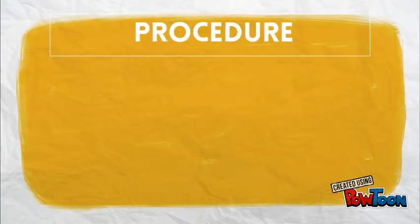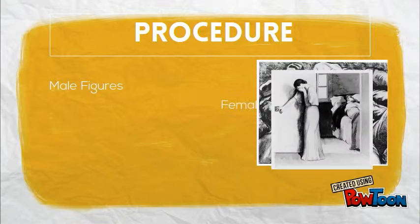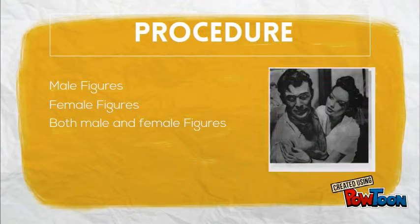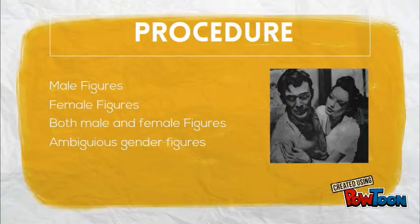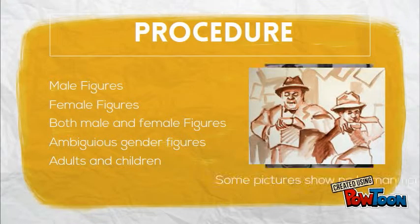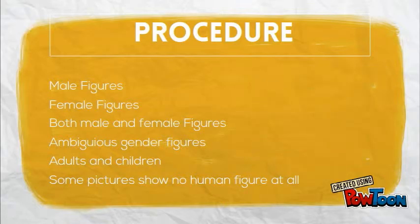The complete version consists of 32 picture cards featuring male figures, female figures, both male and female figures, ambiguous gender figures, and adults and children. Some pictures show no human figure at all. These cards are used as subjects to tell a story about the scene.